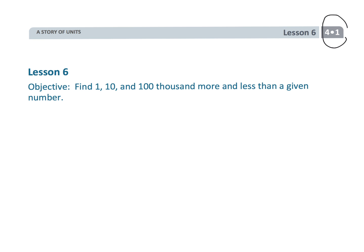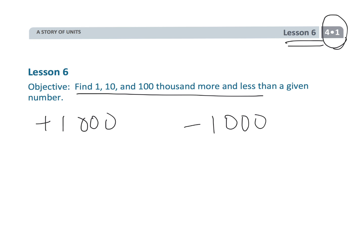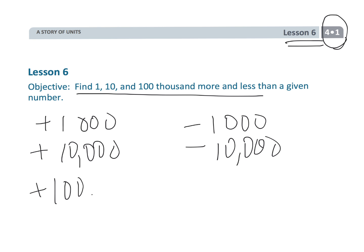This is fourth grade, module one, lesson six. In this lesson, we're going to be finding one, ten, or a hundred thousand more or less — so adding or subtracting things like a thousand, ten thousand, or a hundred thousand.